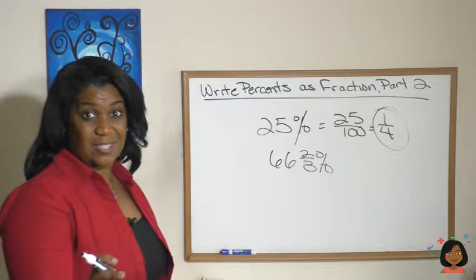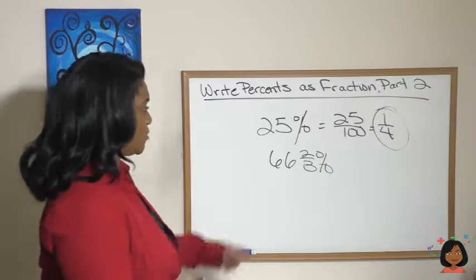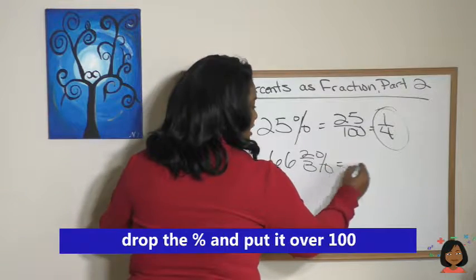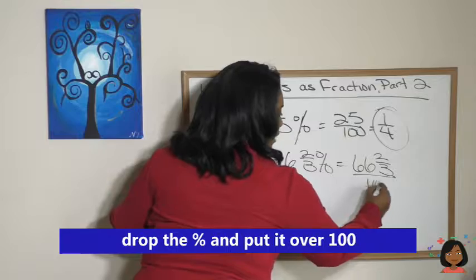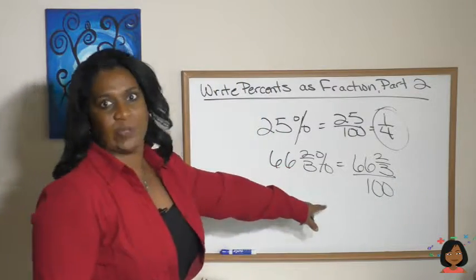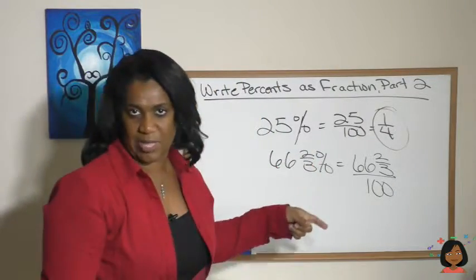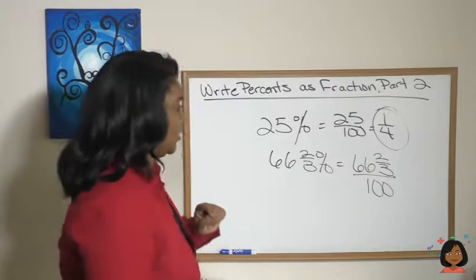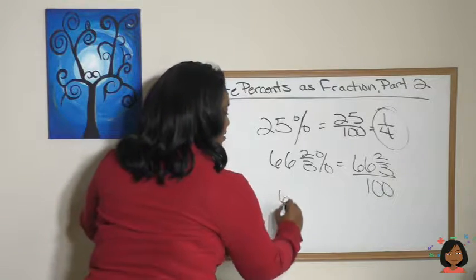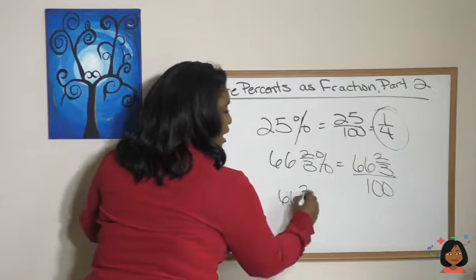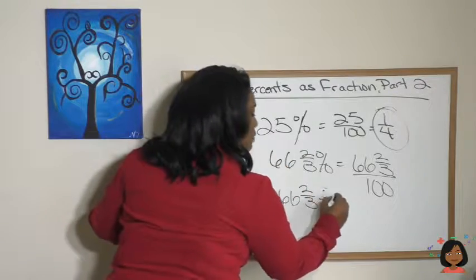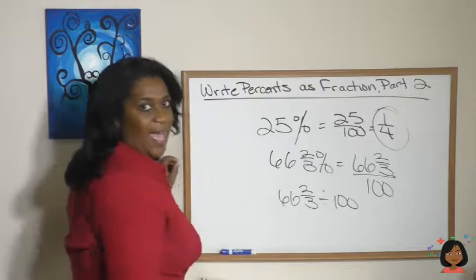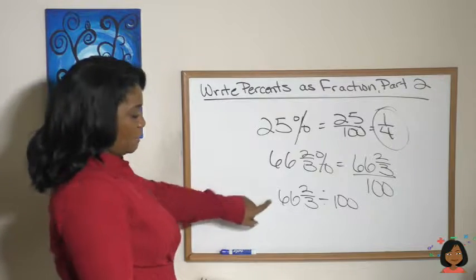Well, here's the good news. The process is still the same, it just has a few extra steps. We're still gonna drop the percent sign and put it over 100. Now I know most of you just freaked out when you saw that. You're like, what am I supposed to do with that? Well, here's the good news, you know what to do with that. We're gonna take our 66 and 2/3 and let's write out the divide by 100 in a different way that looks more familiar to you.